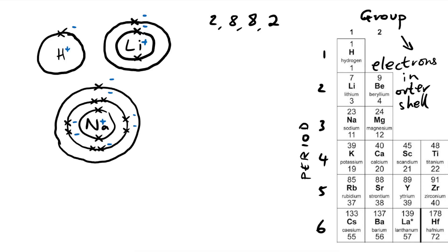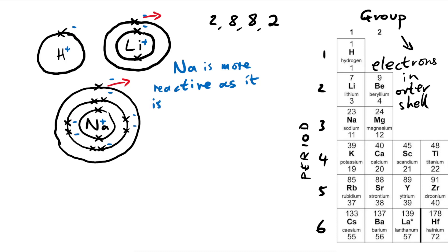So what does this have to do with reactivity? Well, in order to react, these atoms need to lose or give away or donate their outer electron. Hydrogen usually takes part in covalent bonding so we won't say it really gets rid of it - let's talk about lithium and sodium. Out of lithium and sodium, which one is going to find it easier to get rid of its outer electron? It's going to be sodium. Sodium is more reactive as it is able to donate its outer electron in order to get a full outer shell underneath it. And why is this? Because it's further from the nucleus.